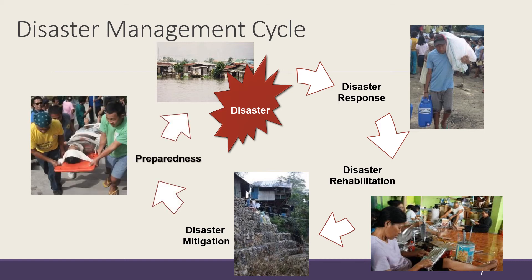The last phase is disaster preparedness. In terms of sequence, disaster preparedness does not necessarily come after disaster mitigation, since preparedness can be conducted even during the disaster response phase. In terms of timing, disaster preparedness simply comes before the next disaster. Activities include early warning systems, contingency plans, trainings on lifesaving skills, emergency drills, and more.